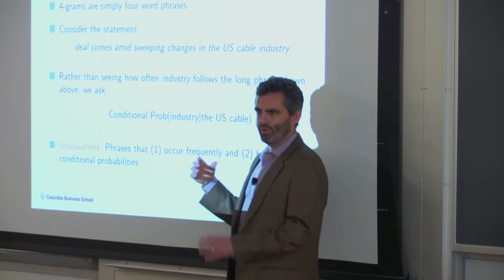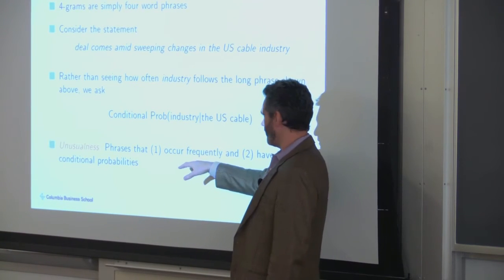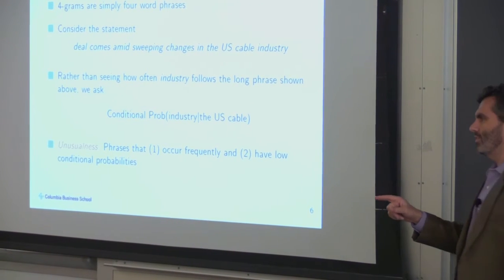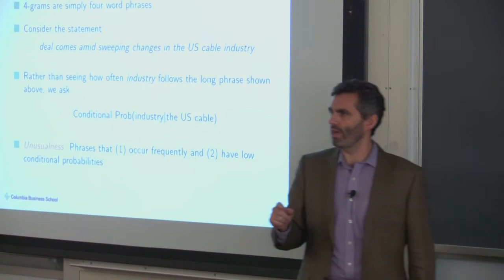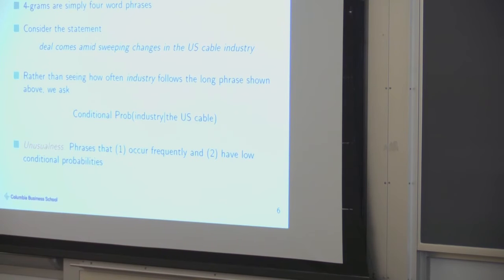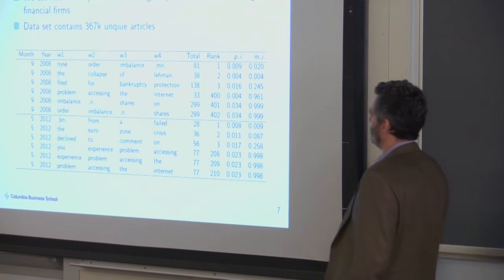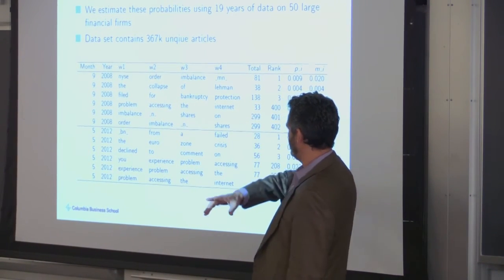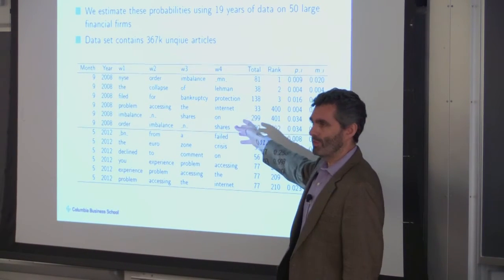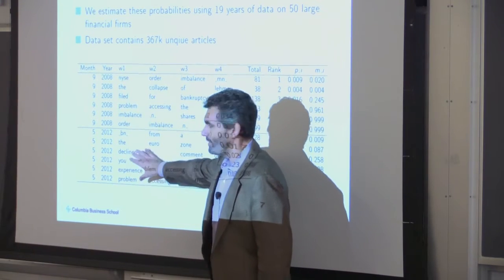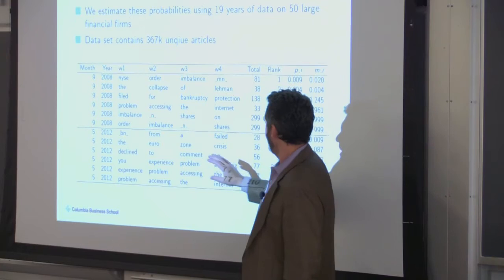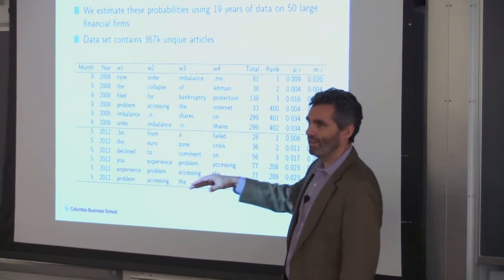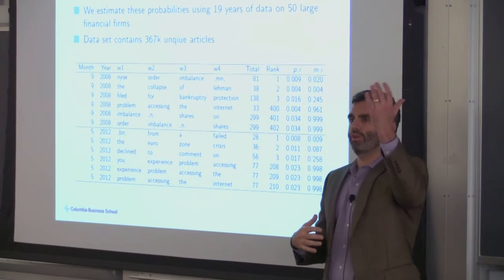We define unusualness by looking for phrases that occur frequently enough — if a phrase only occurs once it may be unusual but that's not enough — and also have a low conditional probability, meaning words that follow other words they don't usually follow. Using this definition we analyze 228 months in our dataset from 1996 to 2014. In September 2008, the month of Lehman's bankruptcy, we found 400 phrases containing a negative word and ranked them by unusualness — what is the probability of seeing the fourth word conditional on the first three.